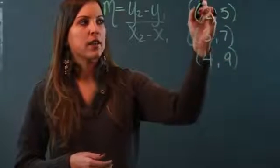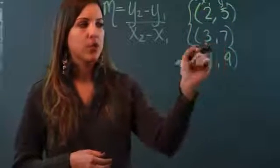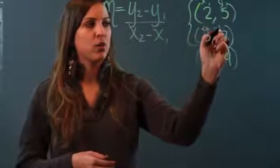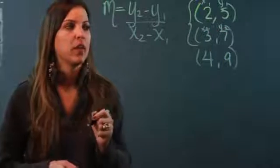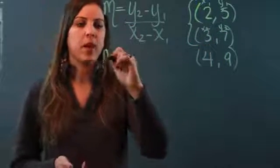Now I have to label my coordinates so I know what my x₂ and y₂ are. My first ordered pair I'm going to call x₁, y₁. You always have to have an x and a y, right? And my second ordered pair I'm going to call x₂, y₂.